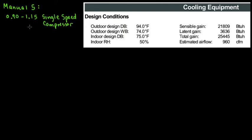So what is a single speed compressor? It's the most basic condenser. Whenever you're needing cooling, it's going to turn on, and then it satisfies the load, and then it's going to turn off. It's an on and off switch. The other range is going to be 0.90 to 1.20, and that's going to be for multi-speed compressors.